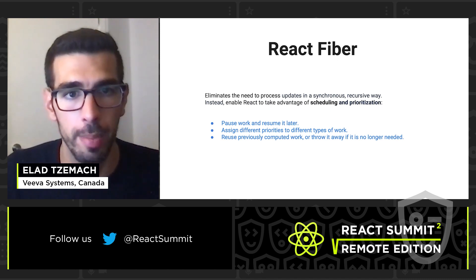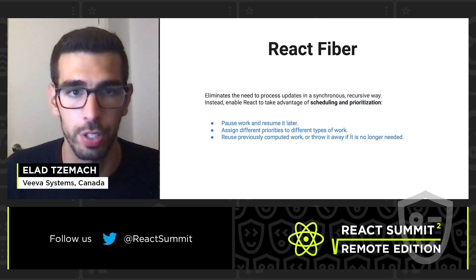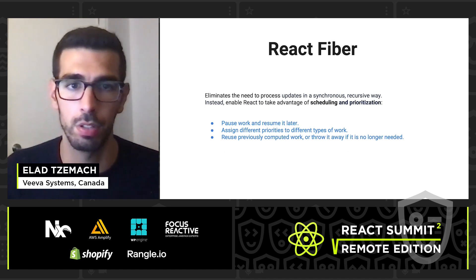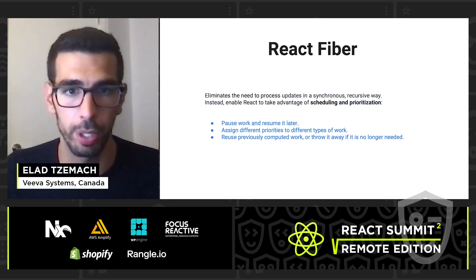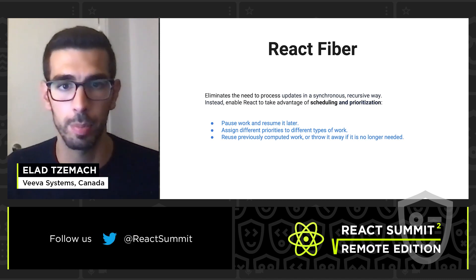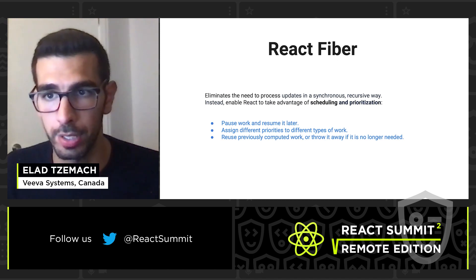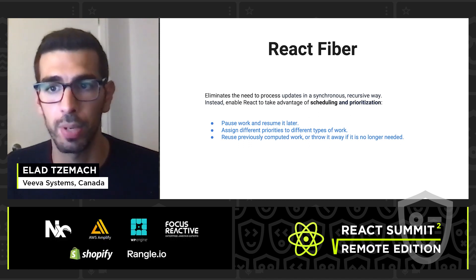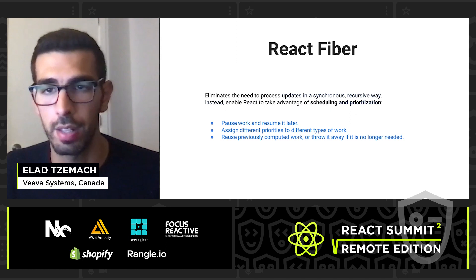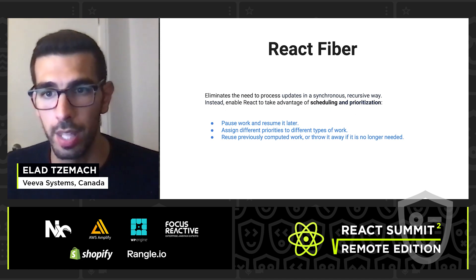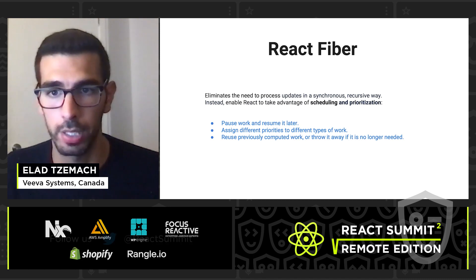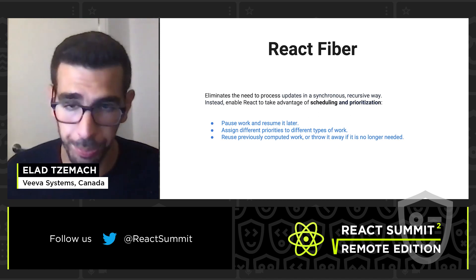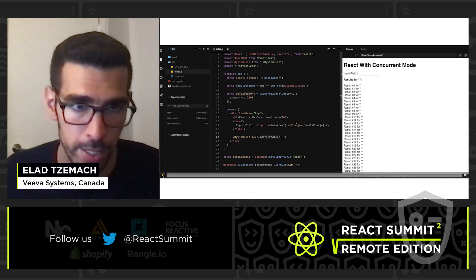React Fiber essentially eliminates the need to process updates in a synchronous, recursive way. Instead, it enables React to take advantage of scheduling and prioritization — enabling us to pause work and resume it later, assign different priorities to different types of work, and reuse or discard previously computed work if it's no longer needed. In our demo, for example, React could keep the input field responsive to the user with higher priority than the list of elements needing to be rendered. Then, when the user isn't blocking the main thread, React can render and display that list of elements. So that sounds cool — let's see it in action.